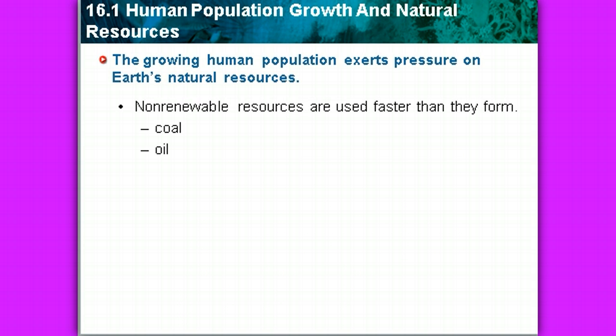Currently, the growing human population exerts pressure on all of Earth's natural resources. We're going to look at non-renewable resources first — they're used faster than they form. Things like coal and oil. In our nutrient cycling packet, I want to refresh your memory.